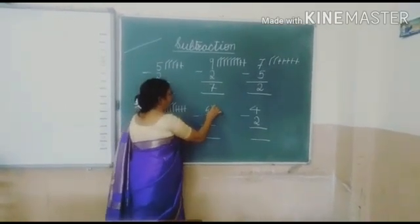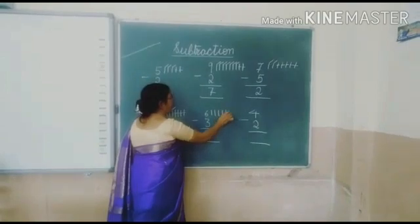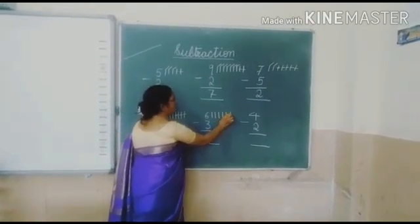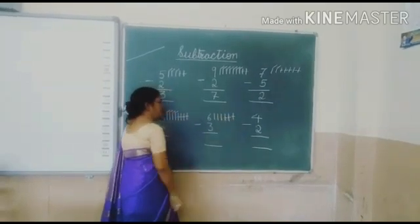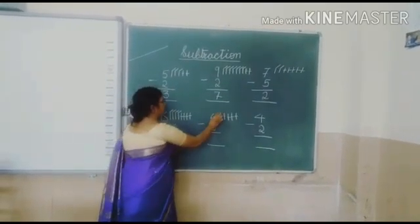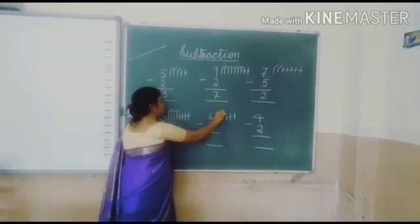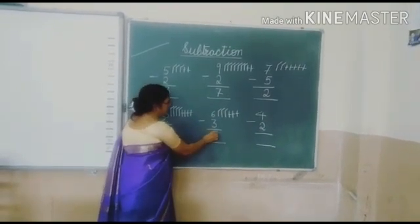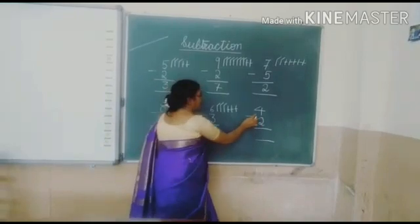This is 6. 1, 2, 3, 4, 5, 6. This is 3. Cut 3 lines. 1, 2, 3. How many left? 1, 2, 3. So 6 minus 3 is 3.